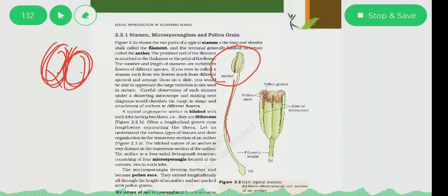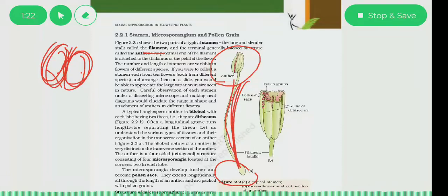And you can see this stalk-like structure, this is called filamen. This filamen is ultimately attached to the flower, to the plant. It is attached to the thalamus.